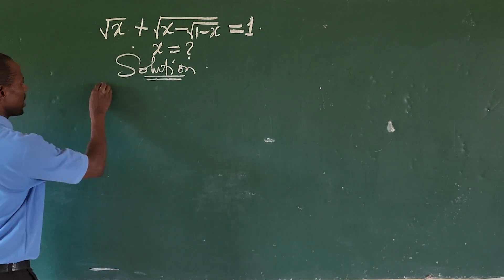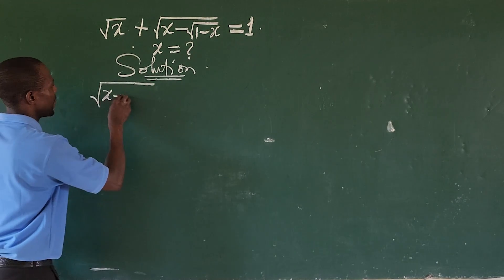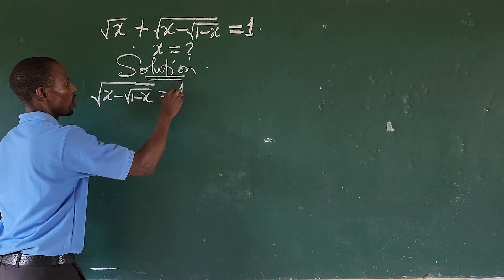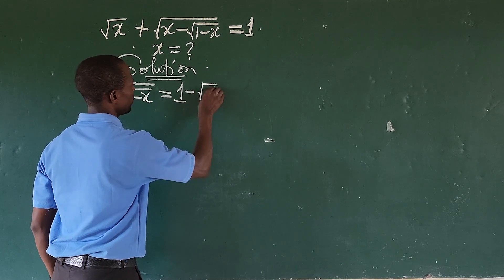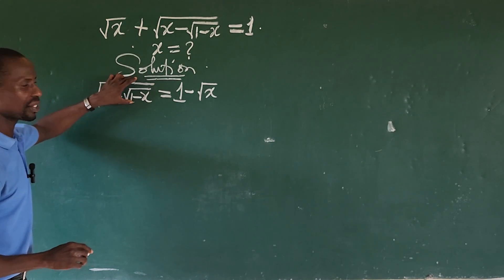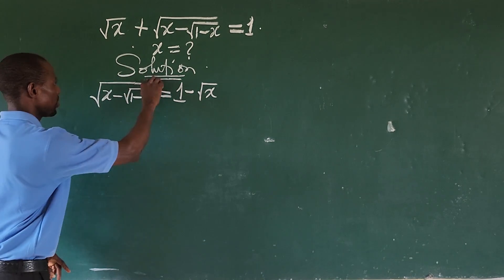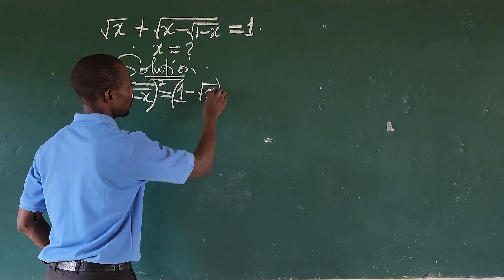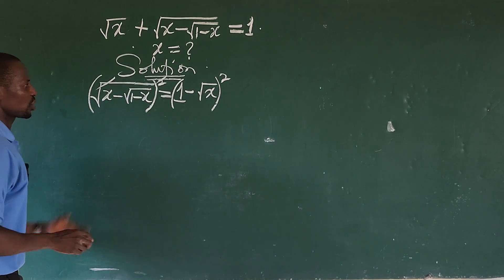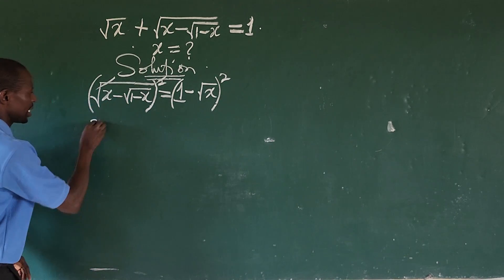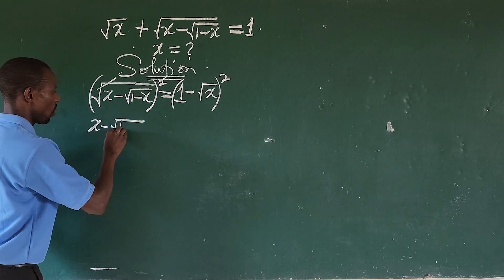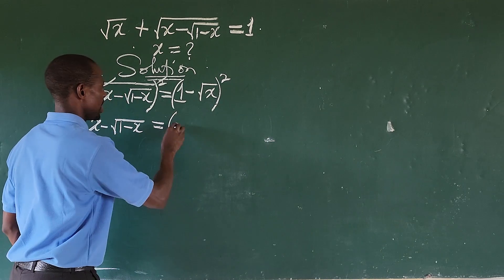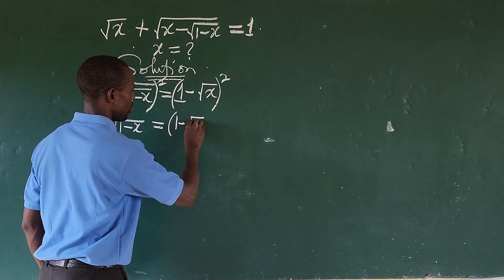We move one term to the right-hand side. So on the left we have the square root of x minus the square root of 1 minus x, equal to 1 minus the square root of x. At this point we cannot eliminate the radical by just squaring both sides directly — we do so carefully, leaving us with x minus the square root of 1 minus x on the left.